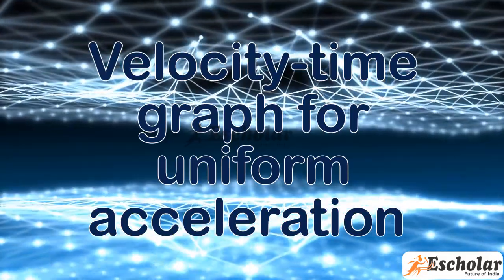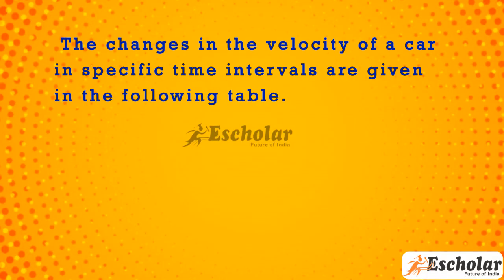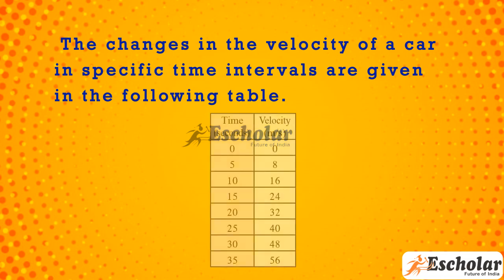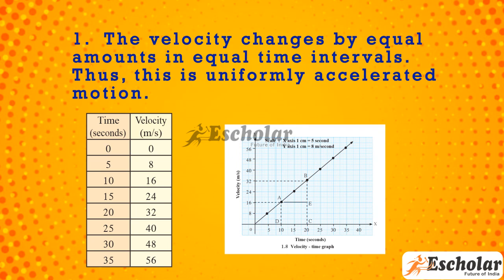Velocity-time graph for uniform acceleration. The changes in the velocity of a car in specific time intervals are given in the following table (time in seconds, velocity in m/s). The velocity changes by equal amounts in equal time intervals, thus this is uniform acceleration.